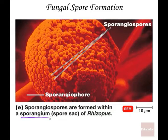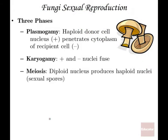Fungi also have a sexual reproduction phase with three stages: plasmogamy, karyogamy, and meiosis. These indicate different ways of conjugation. You can have a haploid donor cell that penetrates the cytoplasm of a recipient. Positive and negative nuclei can fuse, and a diploid nucleus undergoes meiosis to produce haploid nuclei. These sexual spores can recombine with other spores to form a diploid organism.